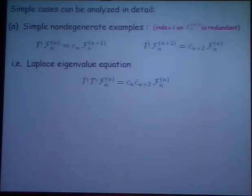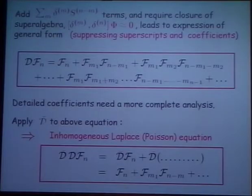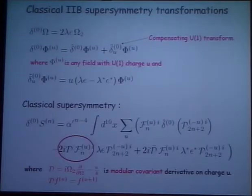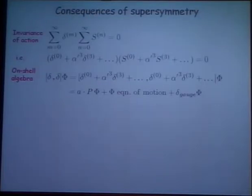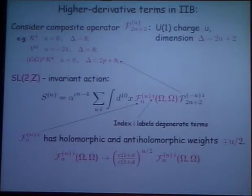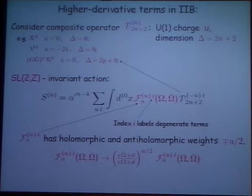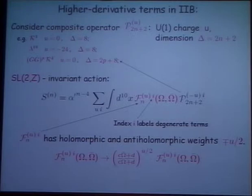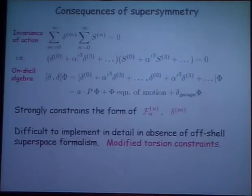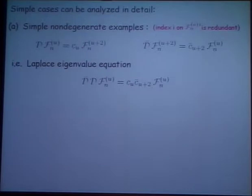So let me now go back to the most simple examples. I should have stressed these F's, that I defined at the beginning, have an index. They're indexed by the dimension or the alpha prime power N and the U(1) charge. But then for any given dimension and charge, there may be a degeneracy factor — there may be several different terms with the same charge and dimension. That's what I call a degeneracy index I. But in the simplest examples, they are non-degenerate.